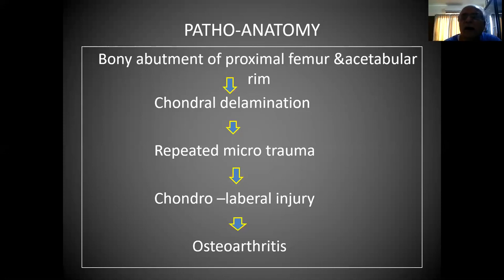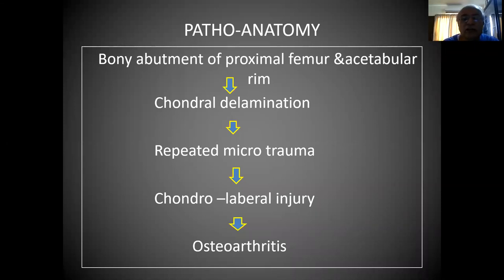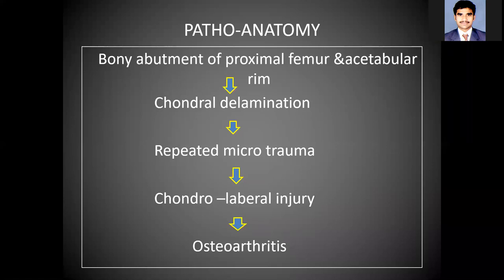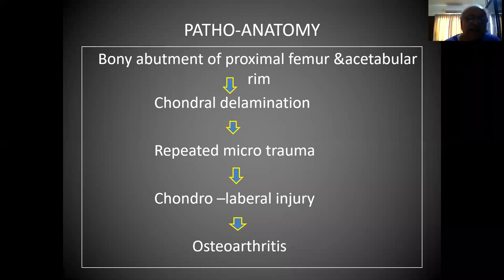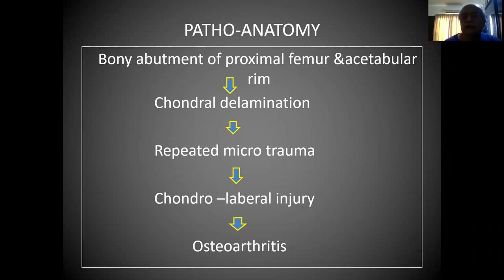It produces repeated microtrauma and chondral level injury. This is very common, and that's why Gans used to repair the labrum of these very young patients. He devised the anterior dislocation surgery and a different approach. Once the chondral level injury occurs, it starts osteoarthritis — that is a precursor of osteoarthritis. So chondral delamination and microtrauma leading to chondral level injury leads to osteoarthritis of the hip. This is the pathology of FAI.